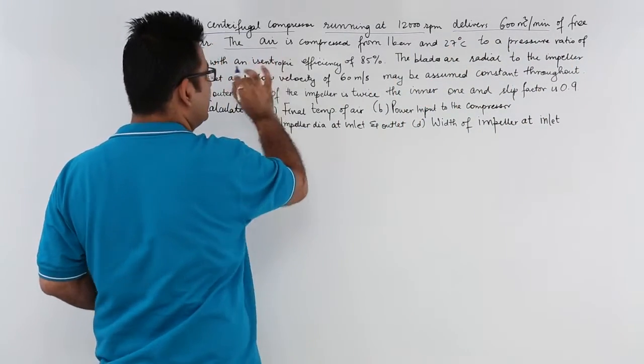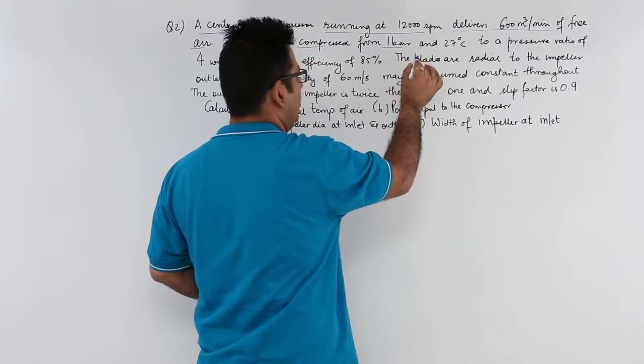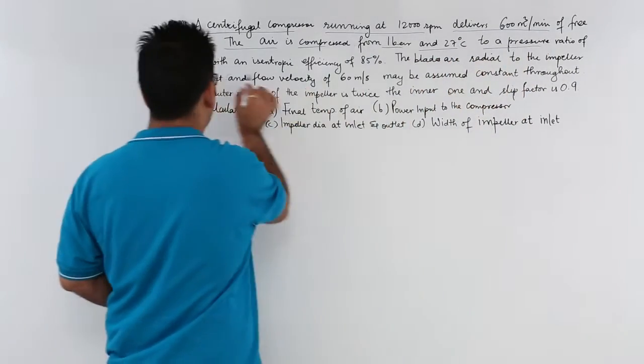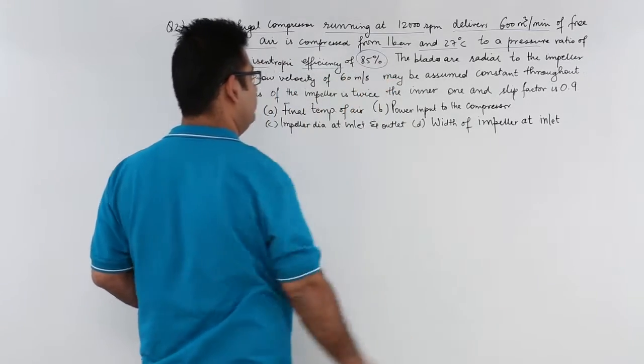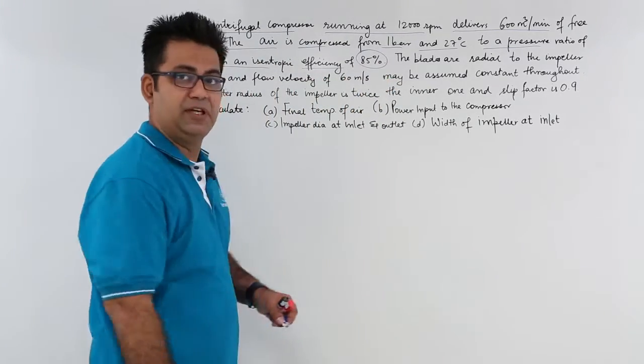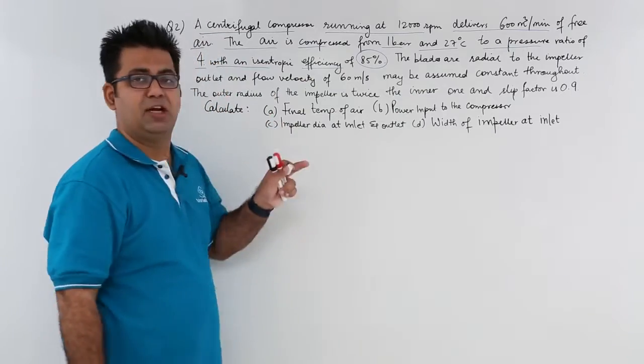The air is compressed from 1 bar and 27 degree Celsius to a pressure ratio of 4 with an isentropic efficiency of 85%. So this is not an isentropic compression.